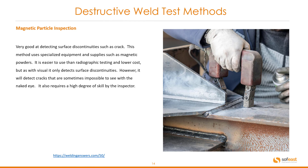Magnetic particle inspection is very good at detecting surface discontinuities such as cracks. This method uses specialized equipment and supplies such as magnetic powders. It is easier to use than radiographic testing and lower cost, but as with visual inspection it only detects surface discontinuities. However, it will detect cracks that are sometimes impossible to see with the naked eye, and it also requires a high degree of skill by the inspector.